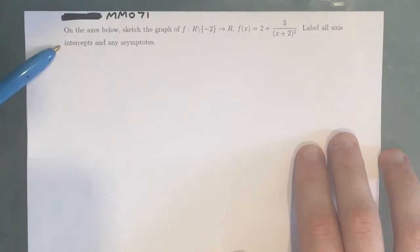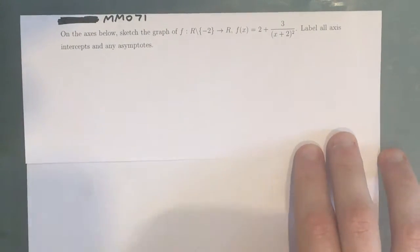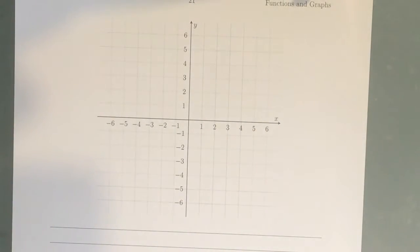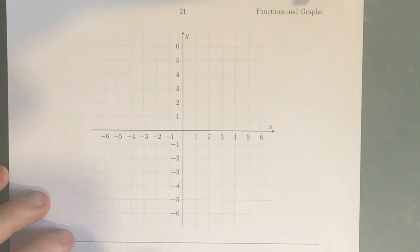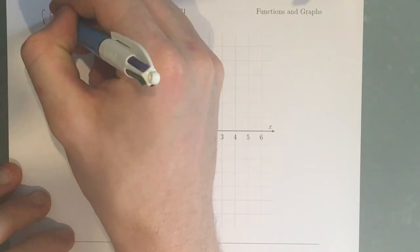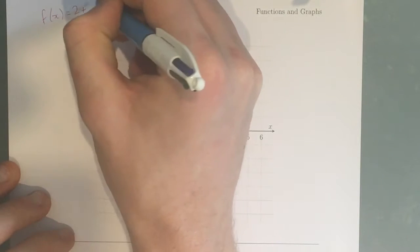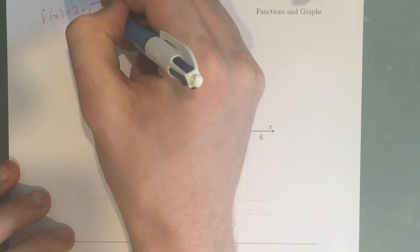Label all axis intercepts and any asymptotes. So we've got our axis here, and I'm just going to rewrite the equation at the top so we can keep track of it all. We've got f(x) equals 2 plus 3 over (x plus 2) squared.